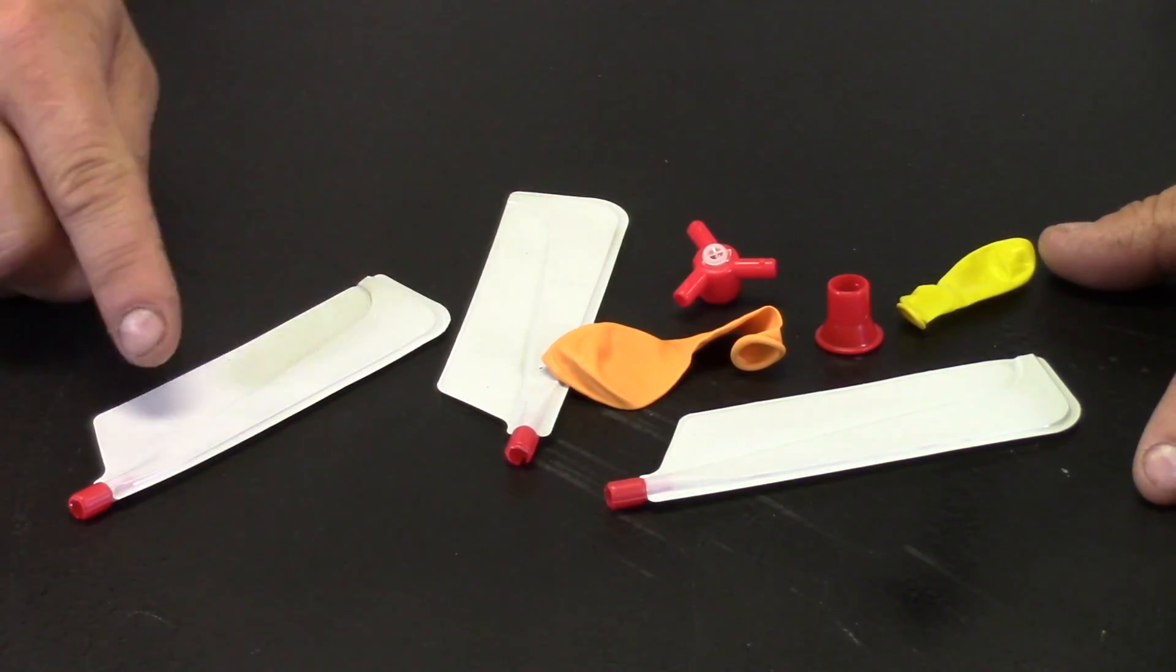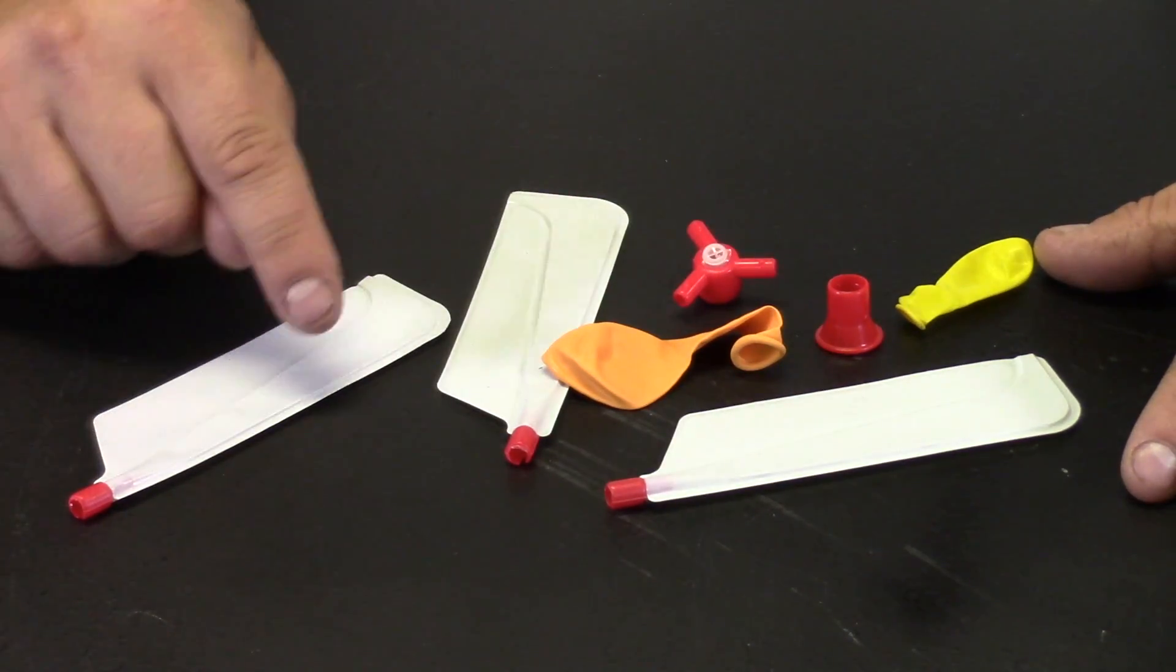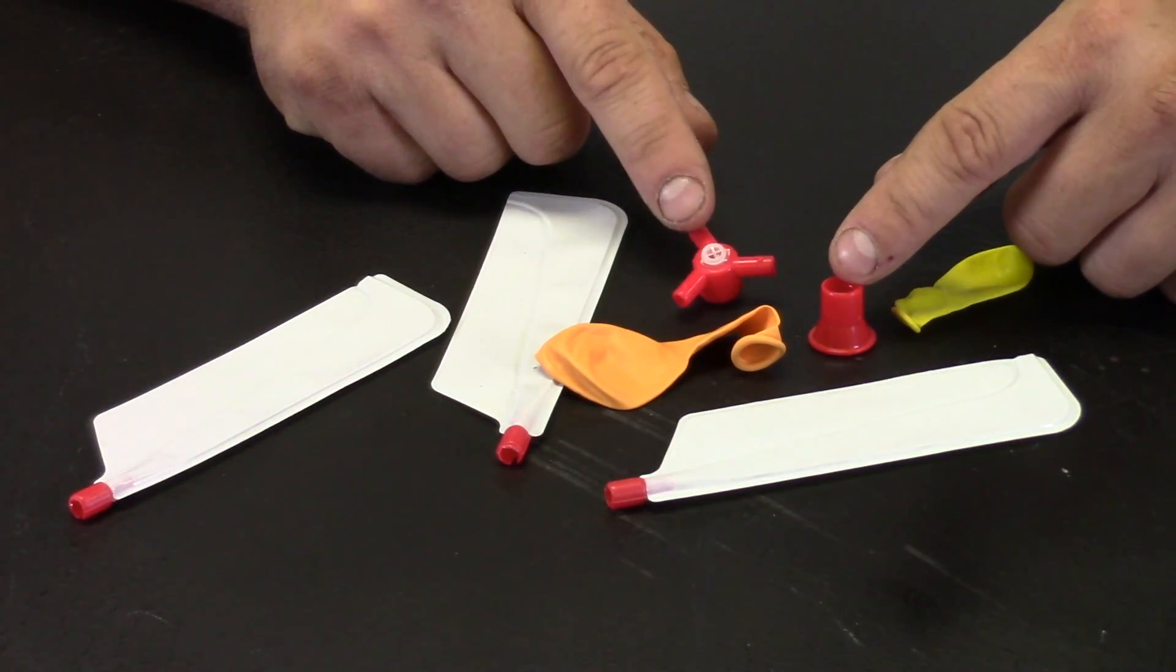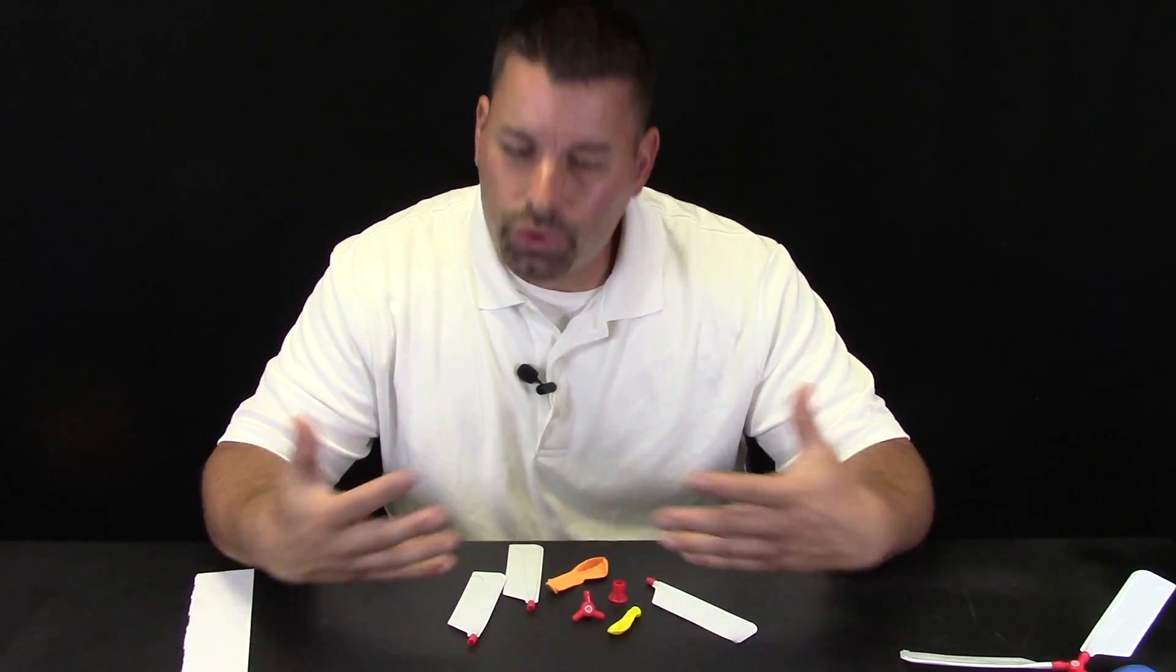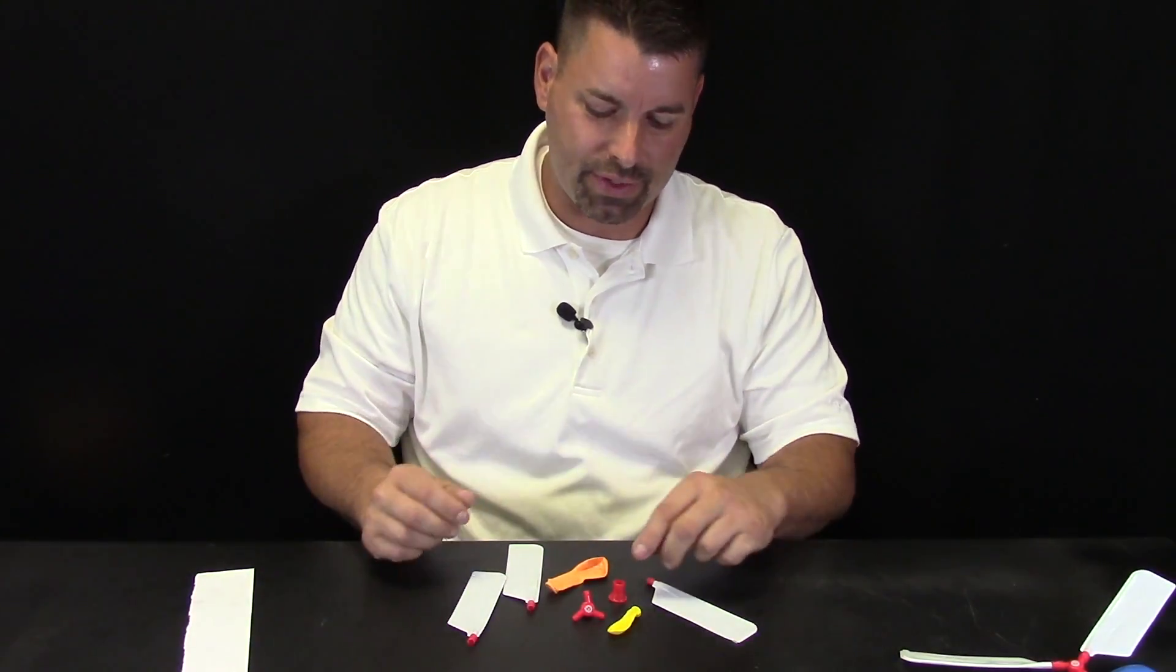So here are our parts: our wings or blades that make our helicopter work, our balloons, and then these two pieces that attach the wings to the balloon. Let's take a closer look at each part and see how it all fits together.